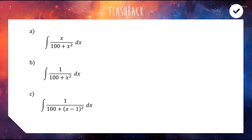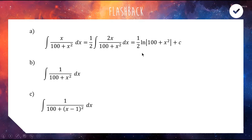With the first one, hopefully you recognize that we can apply a logarithm here because we can make the top of the fraction look like the derivative of the bottom. We can multiply 2 on the top by putting a half out the front, and now the numerator is the derivative of the denominator — that's when you can use logarithms. Don't forget your constant and don't forget your absolute values. That's a question you could find in advanced math.